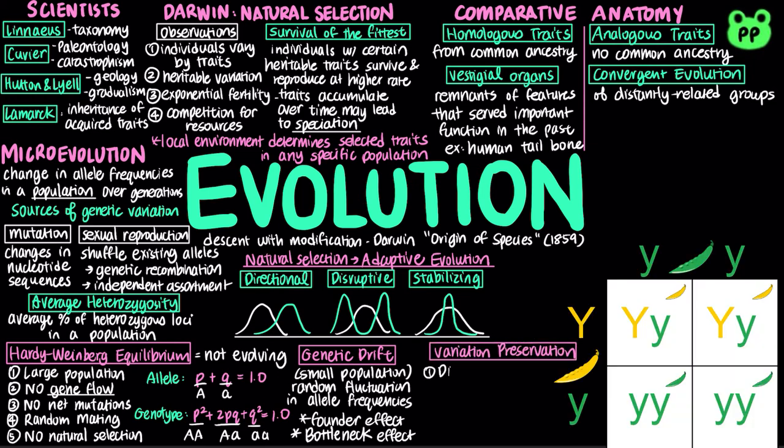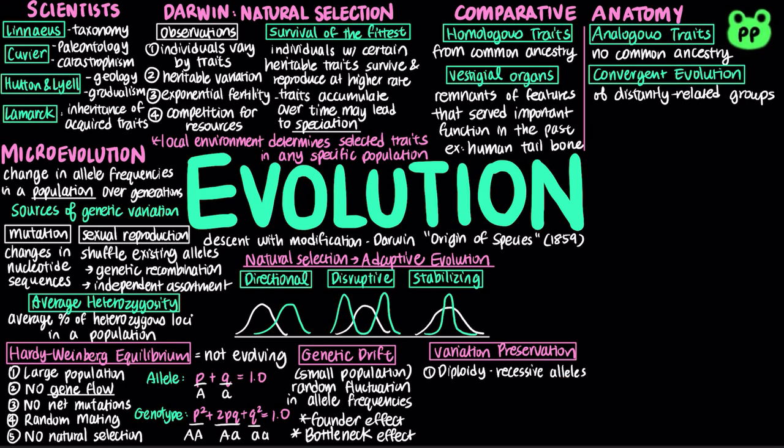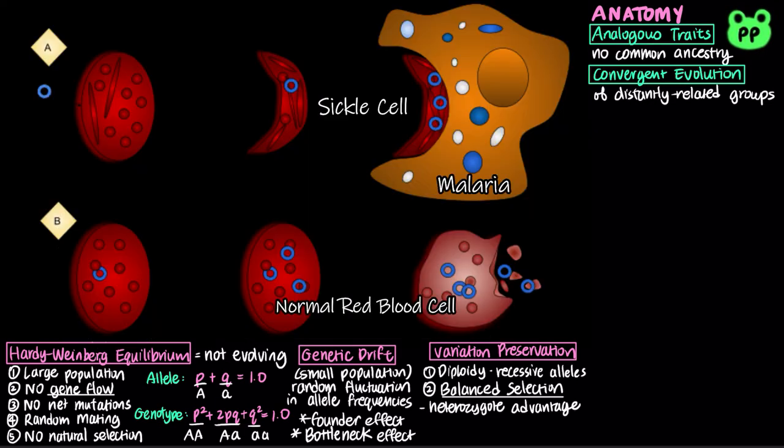Various mechanisms help preserve genetic variation in a population. Diploidy maintains genetic variation in the form of hidden recessive alleles, so that harmful alleles can still persist within a population. In balanced selection, natural selection maintains two or more forms in a population. Heterozygote advantage occurs when heterozygotes have a higher fitness than do both homozygotes. Therefore, natural selection will tend to maintain two or more alleles at the locus. For example, the sickle cell allele causes mutations in hemoglobin but also confers malaria resistance.